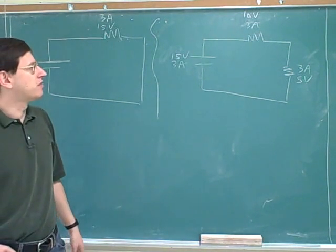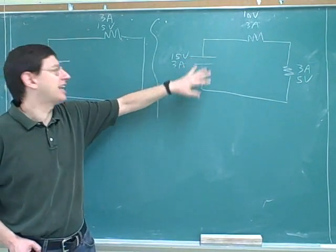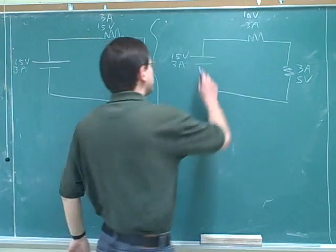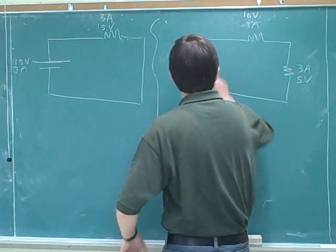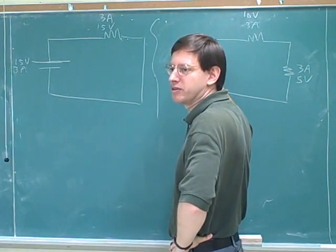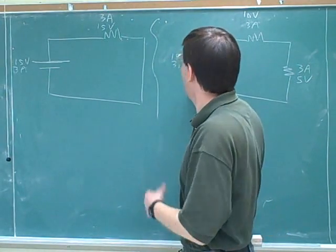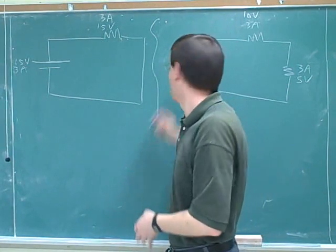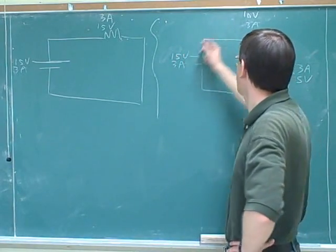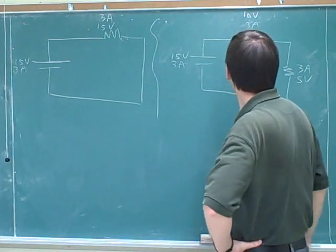It should be obvious that the voltage drops have to add up to the voltage source, because this is a gain in height and these are the losses in height. If we go all the way around the circuit, we have to end up at the same height we started — no change in height. So the total gains in height have to equal the total losses in height. The total gains in voltage around the loop have to equal the total losses in voltage around the loop.